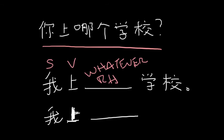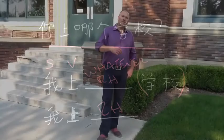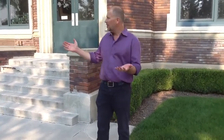'Wo shang nage xue xiao.' This part here is technically optional — if you want to be really formal you can say 'wo shang nage xue xiao,' or you can just say 'wo shang Roland Hall xue xiao.' If you wanted to talk to someone and say 'what school do you go to?' — here's Roland Hall — 'wo shang Roland Hall xue xiao,' meaning 'I go to Roland Hall.' That's how you do it. Very simple, very easy.